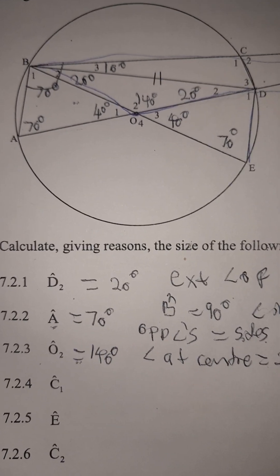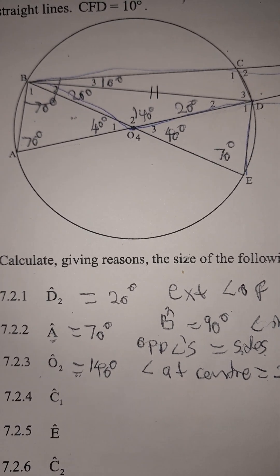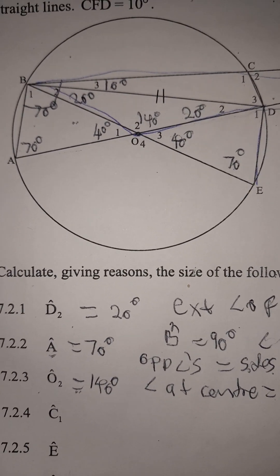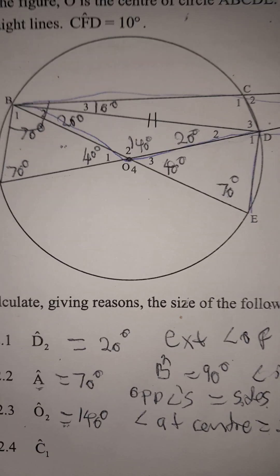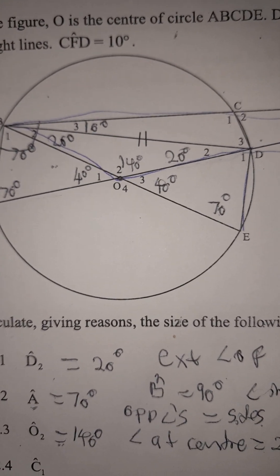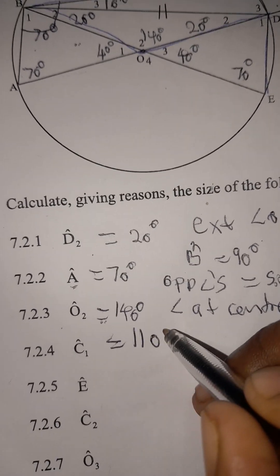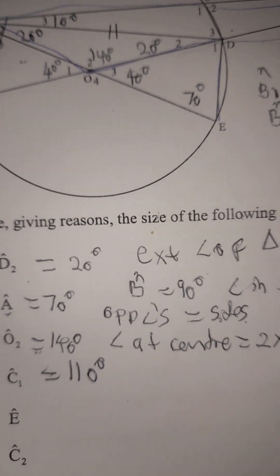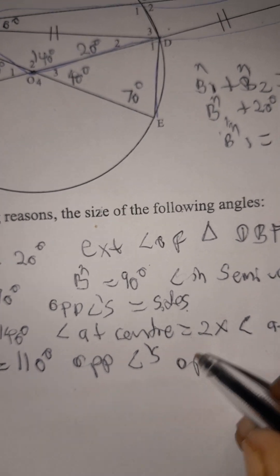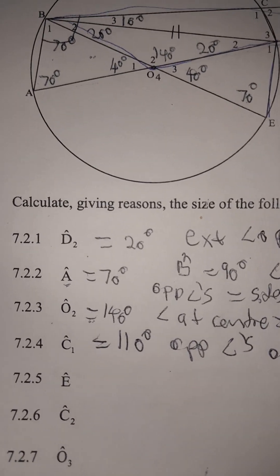Now let's look at angle C1. Since ABCD is a cyclic quad, C1 is opposite to A, so 180 minus 70 equals 110 degrees. Angle C1 equals 110 degrees. The reason: opposite angles of a cyclic quadrilateral.